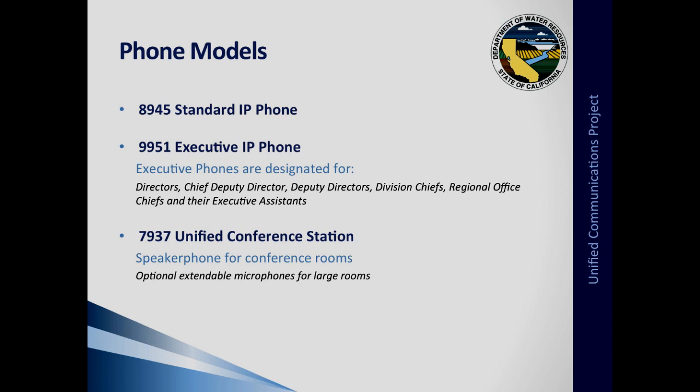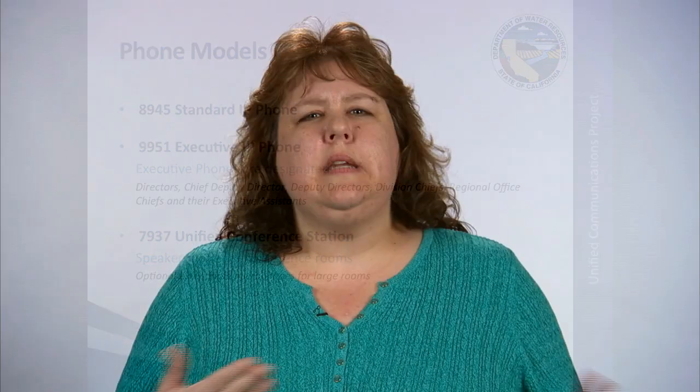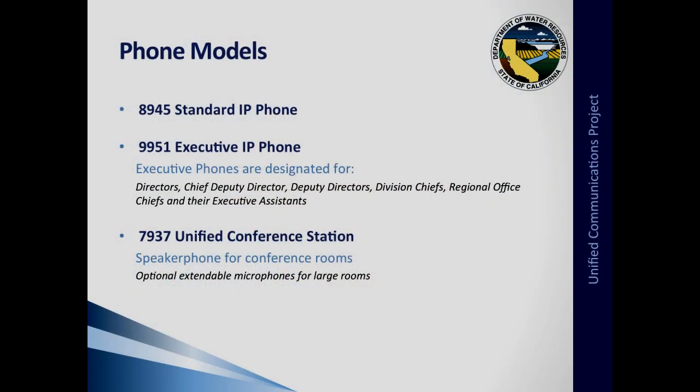There are two phone models. The majority of employees will receive the 8945 standard IP phone, and executives, directors, chief deputies and so on will receive the 9951 executive phone. The main difference is that executive phones have multi-line capabilities. Large reservable conference rooms will be equipped with the 7937 unified conference stations. If a conference room has a phone now, it will have a phone after rollout — it may not be the unified conference station, but it will still be an IP phone.